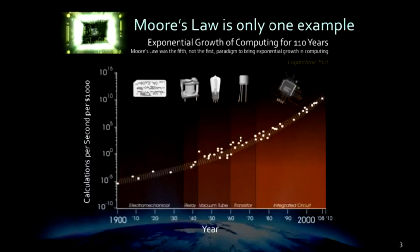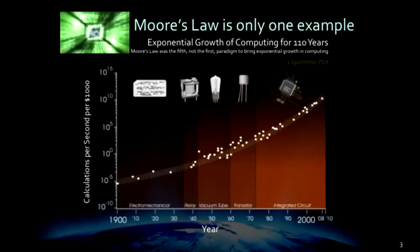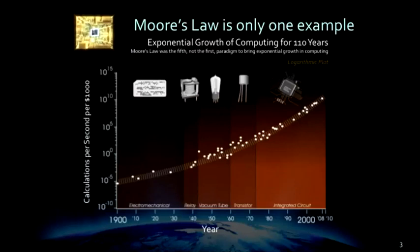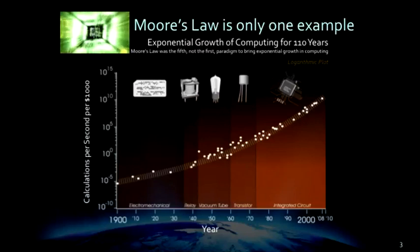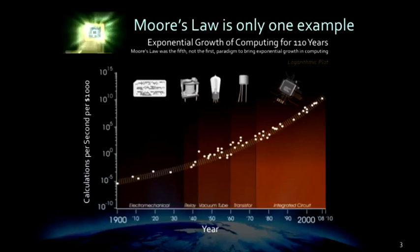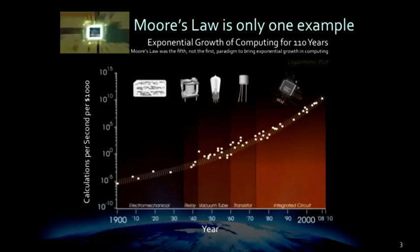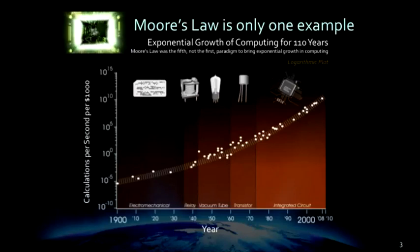This is the power of computers. It's measured in instructions per second per dollar — that's the price-performance of computation. This goes back to the 1890 census, and it's a logarithmic scale. Every time you go up the graph, we're multiplying by 100,000.